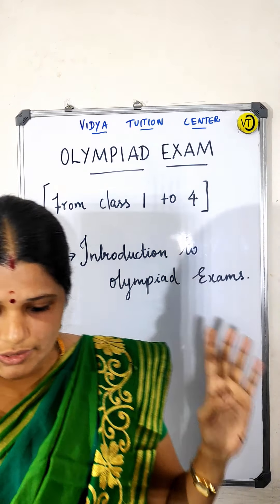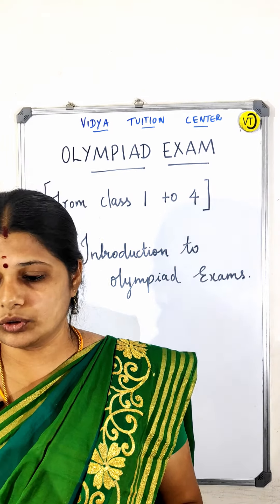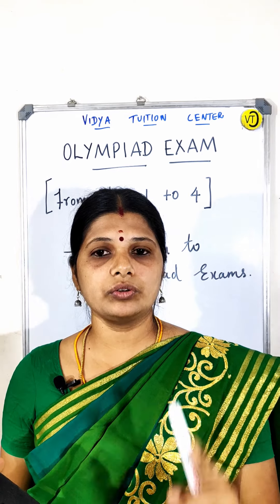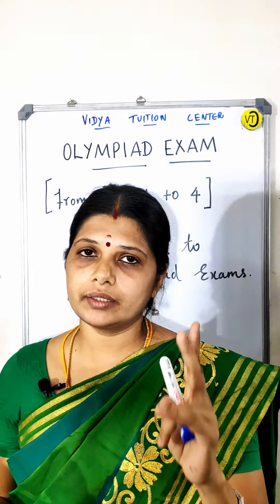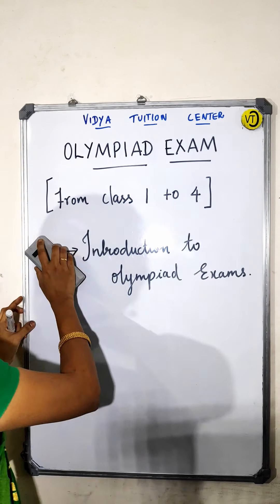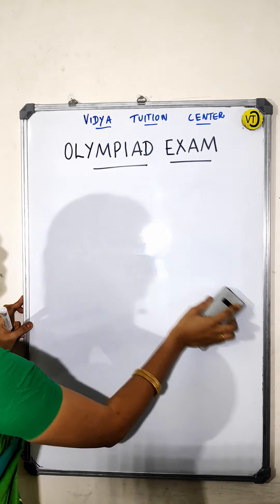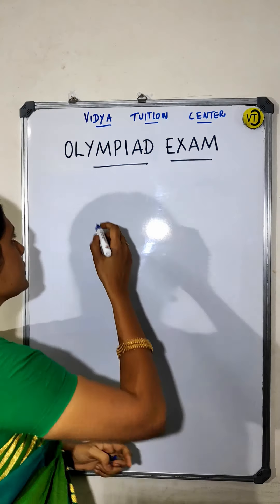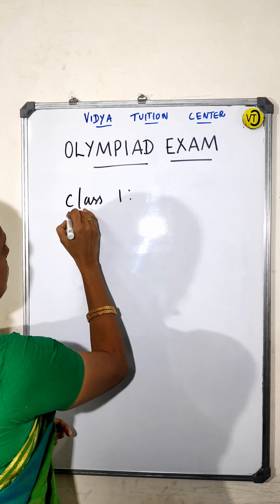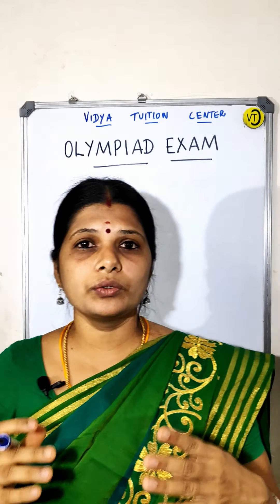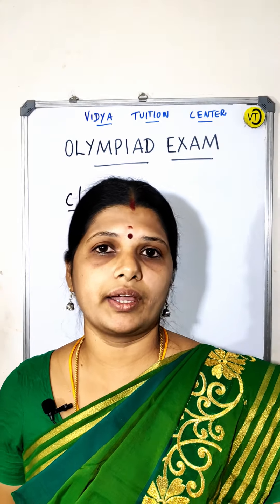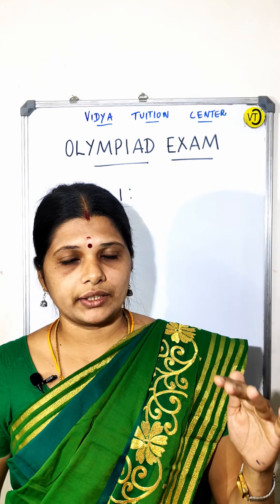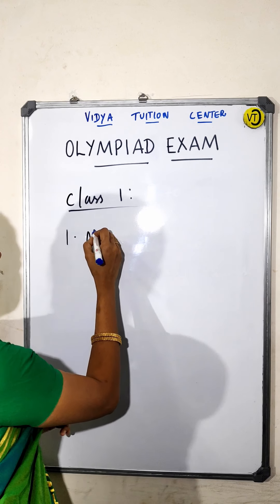As I mentioned, first you have to know the correct syllabus and then choose the right book to practice. For class 1, those who are newly entering the Olympiad should know the syllabus. The first topic is Number Sense.